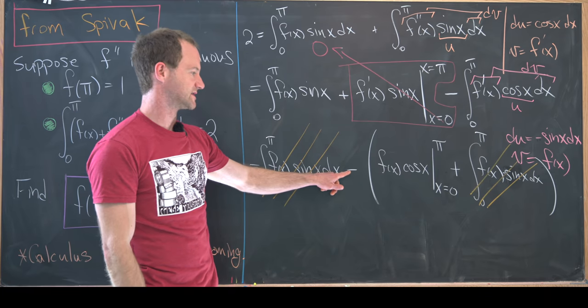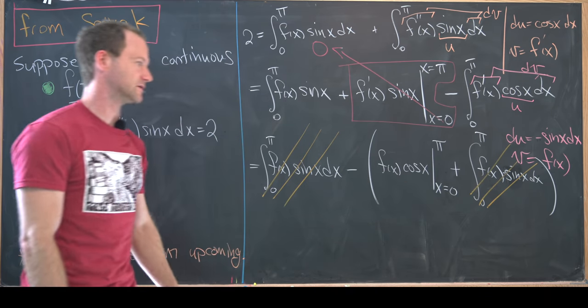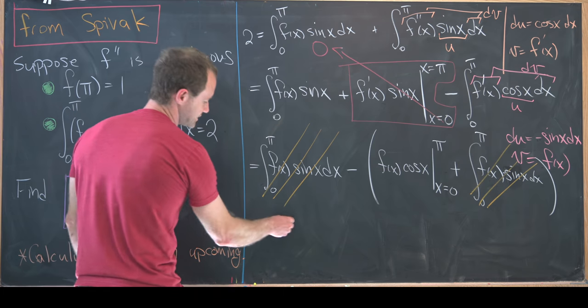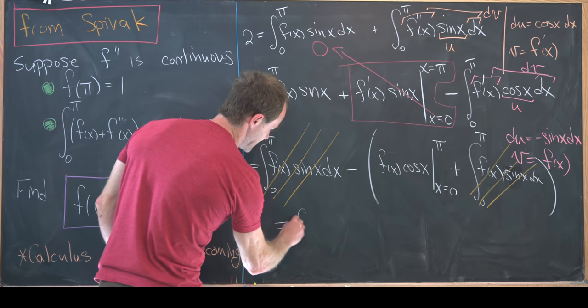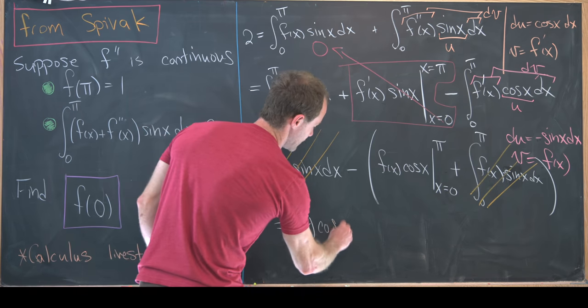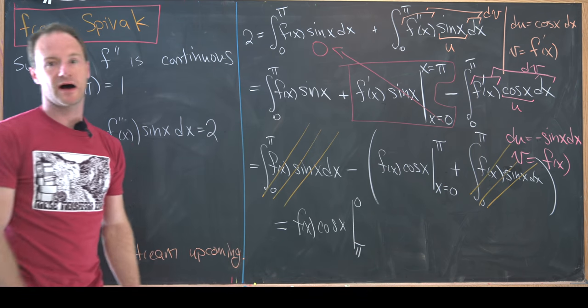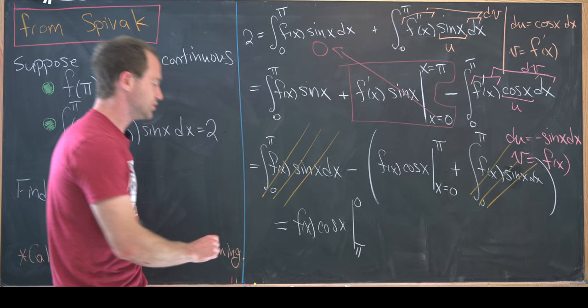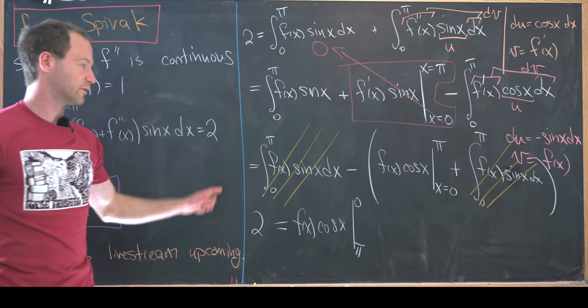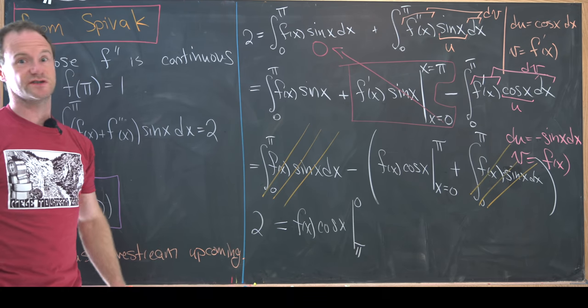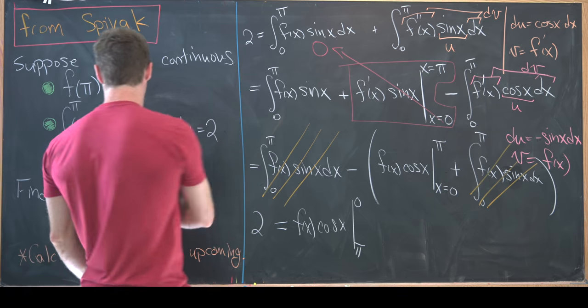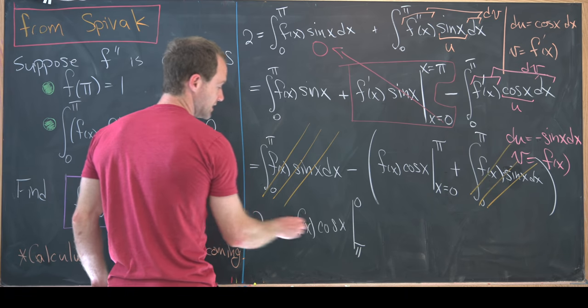Then I'll take this minus sign and use it to swap the bounds of evaluation. That's a standard trick. So that'll give me f(x) times cos(x) evaluated at the top at zero and the bottom at π. Now let's bring this two down and notice that we've created an equation which is everything that we need in order to find f(0).